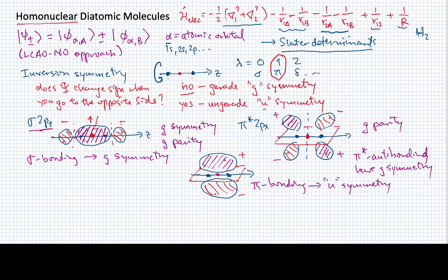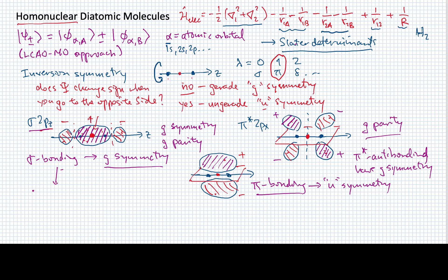This will generally be true of pi bonding orbitals. Sigma bonding orbitals will have g-symmetry. Pi-star will have g-symmetry. And when we go from sigma bonding to sigma anti-bonding, we actually change the parity of these orbitals so that they have u-symmetry.